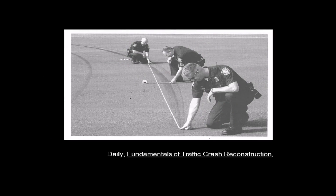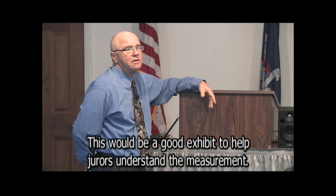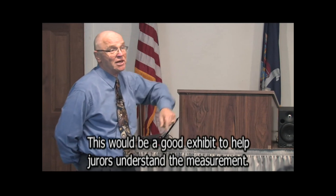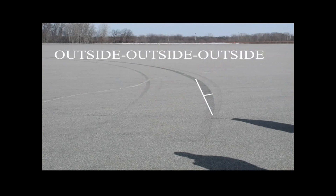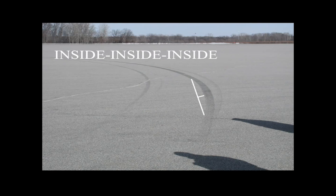Here are some officers demonstrating. You can see they have a cord, and at the middle they have another tape measure and they're measuring the separation. They have the cord on the outside of the mark on both ends, and measuring to the outside of the mark. You have to have a continuous circle — it would be wrong to measure outside to outside for the chord and then measure to the inside with the middle ordinate tape, because that's not even the same circle anymore. So that's called outside to outside to outside. You could measure inside to inside to inside — it doesn't really matter, whichever edge is most clear to your eye.